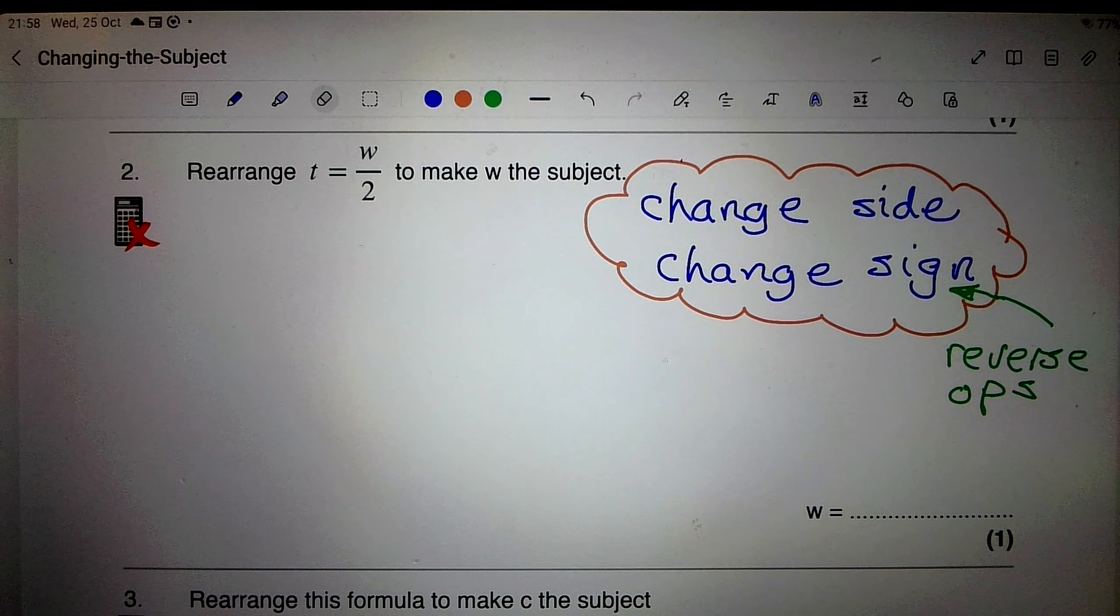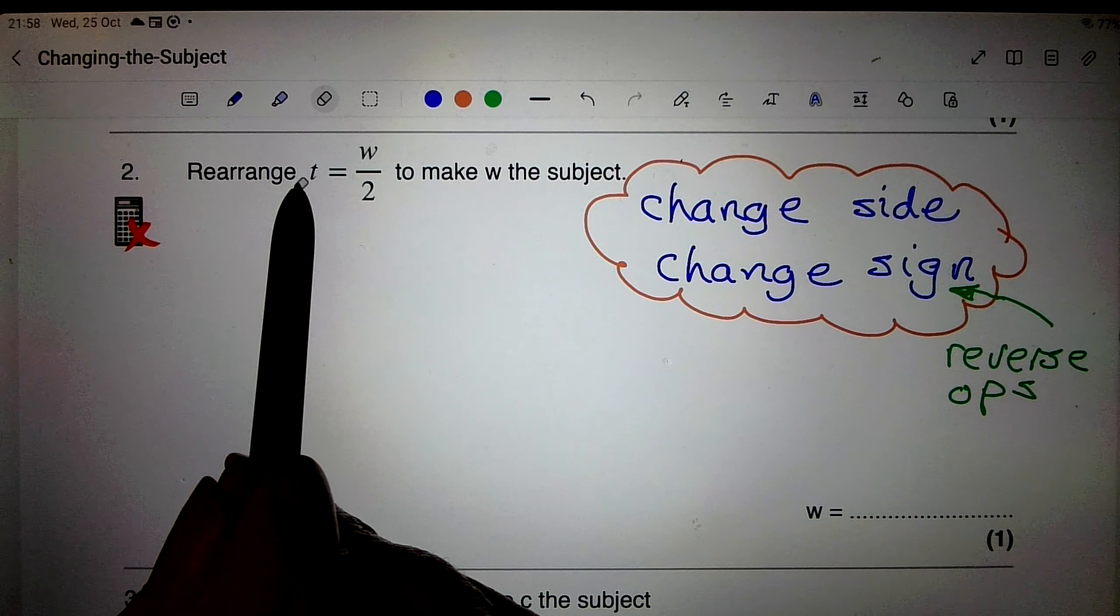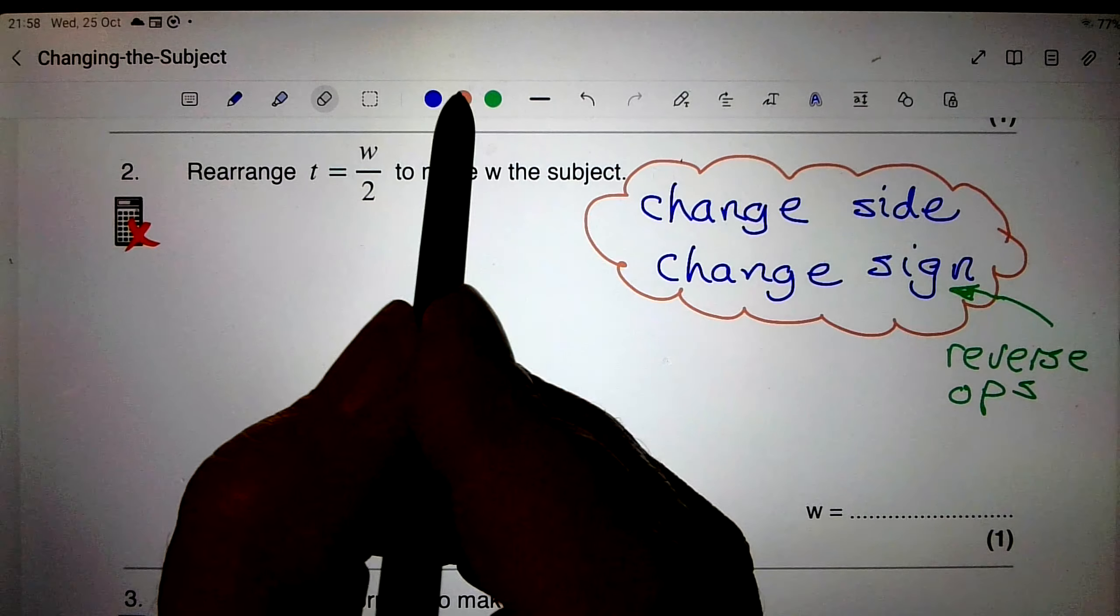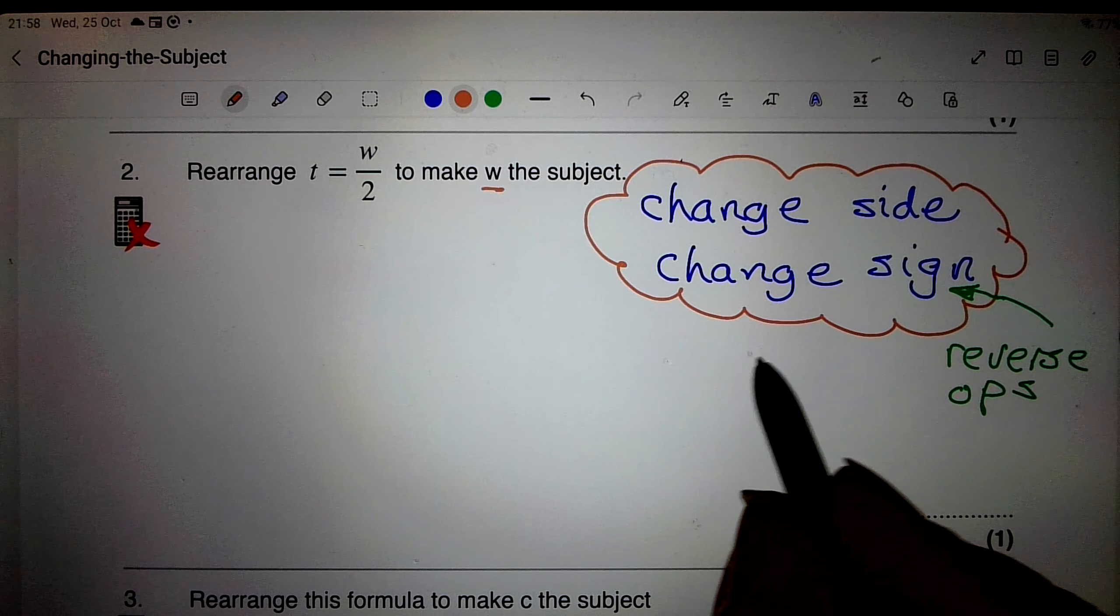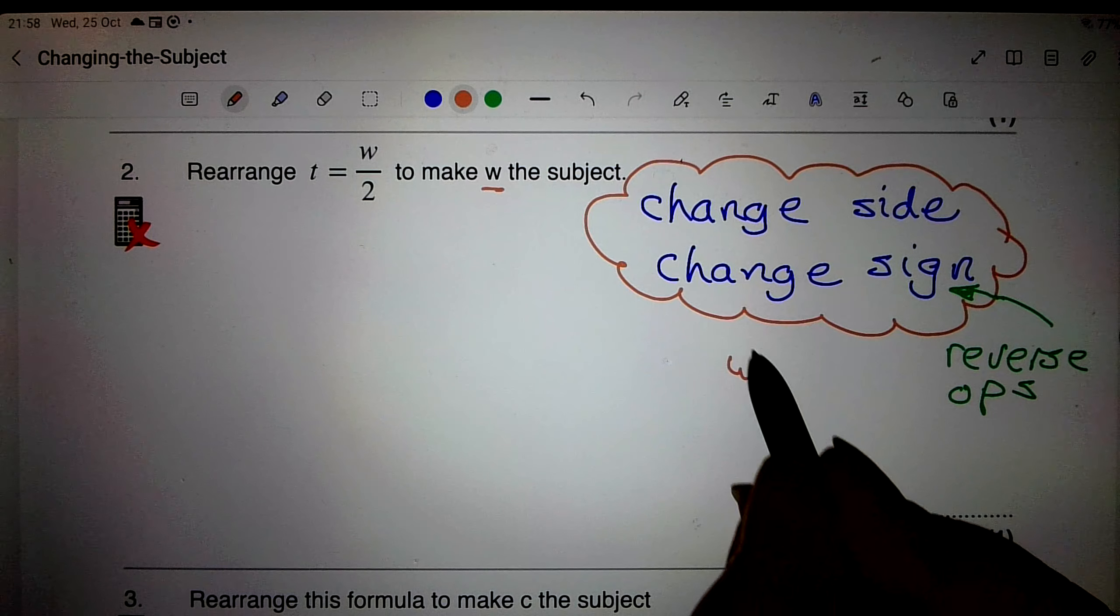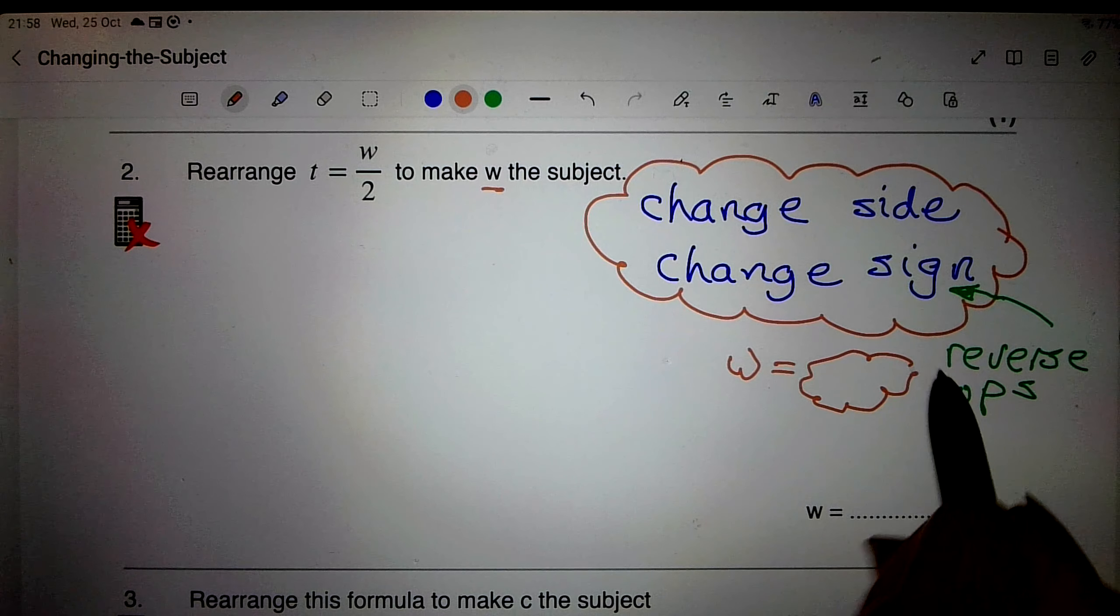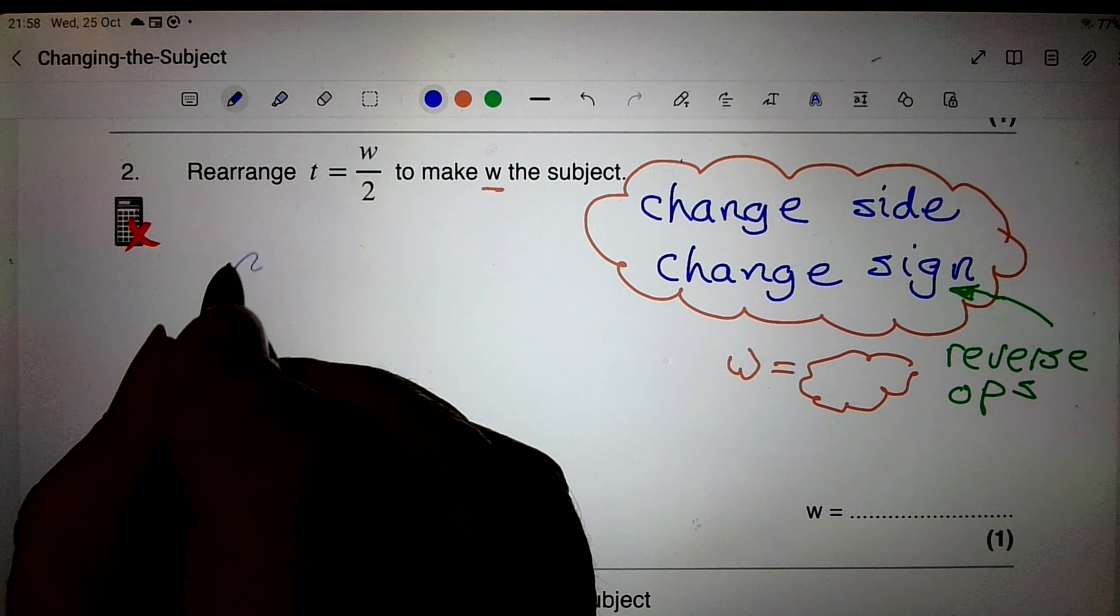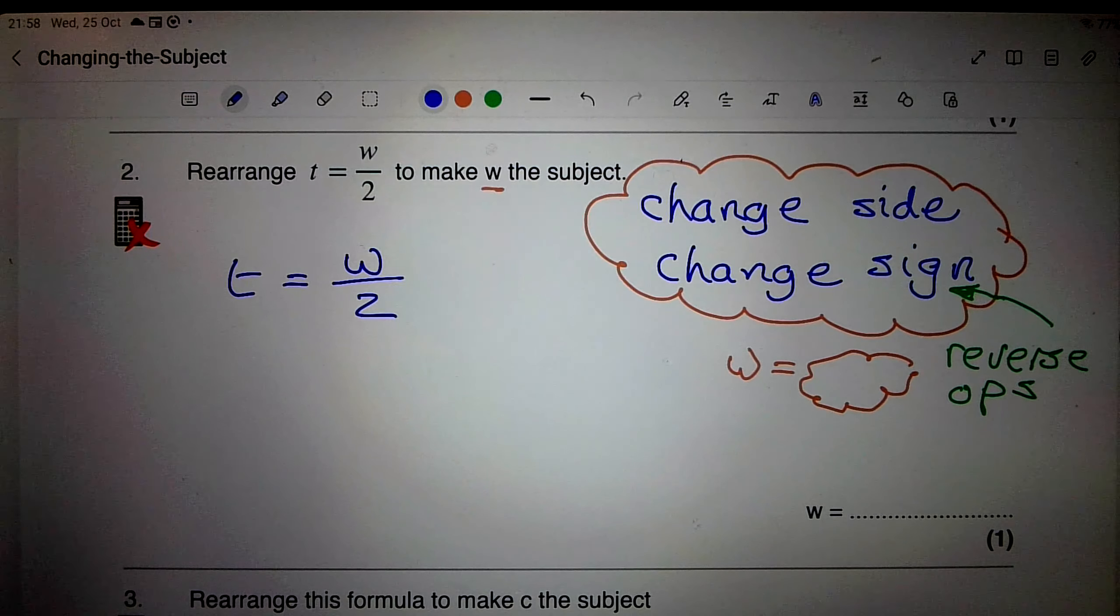Right, here's example number 2. It says rearrange t equals w over 2 to make w the subject. So I want to finish up with w equals something or other. Like before, I'm going to write this out again, t equals w over 2.